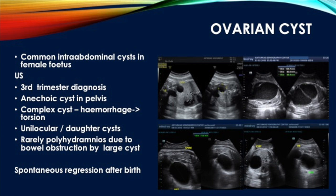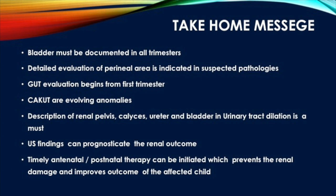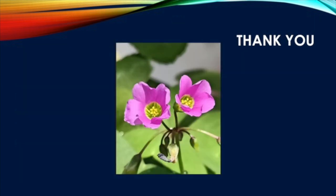In reporting, we should mention the presence of a pelvic cyst rather than labeling it as ovarian cyst. To conclude: the bladder must be documented in all trimesters; detailed evaluation of the perineal area is indicated in suspected pathologies; CAKUT are evolving anomalies; in describing urinary tract dilatation, include renal pelvis, calyceal system, ureter, bladder, and amniotic fluid. Ultrasound findings can prognosticate renal outcome and therefore must be meticulously evaluated, enabling timely antenatal and postnatal therapy to prevent renal damage and improve outcomes.